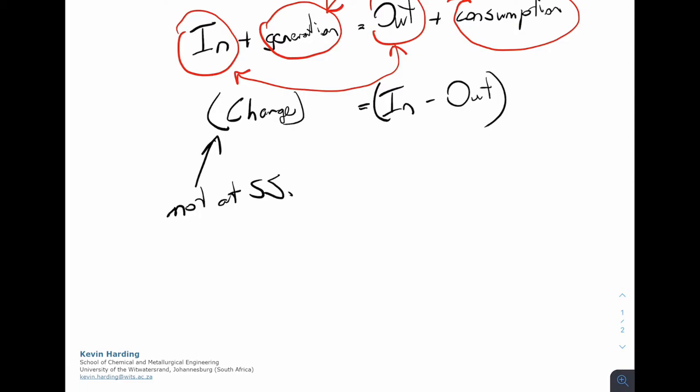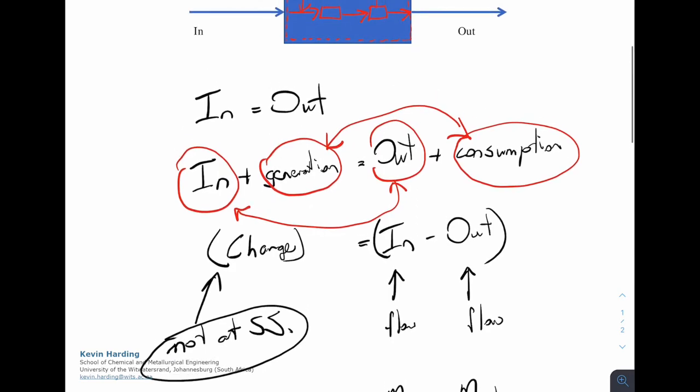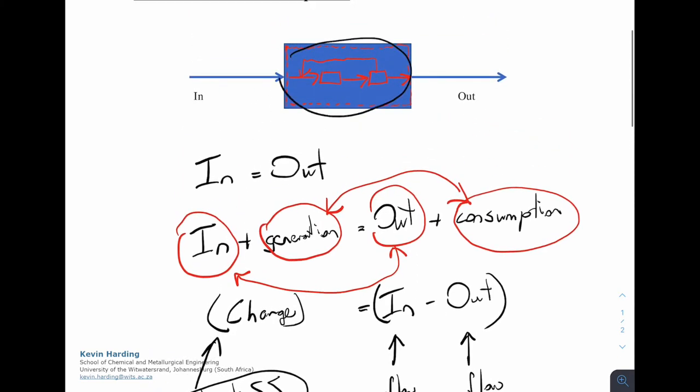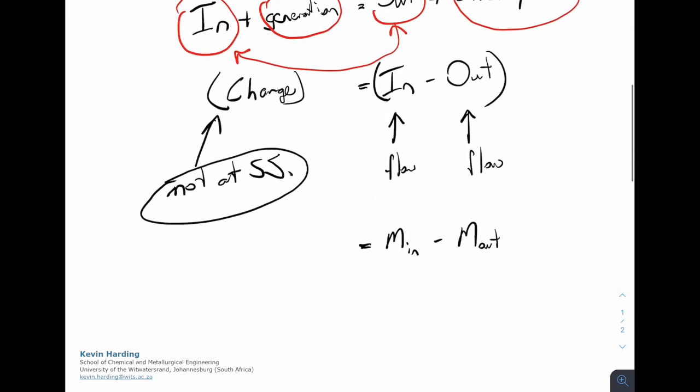Like I've said before, steady state, I get lazy, so I'm just going to write SS for steady state. The in term is a flow term and the out term is also a flow term. That's the actual streams coming in. Because of that, I'm going to call them the mass flow. It's going to be the mass coming in minus the mass coming out. We have a change because it's not at steady state. That change is the change inside the system. The generation consumption is what's happening inside our black box or our system.